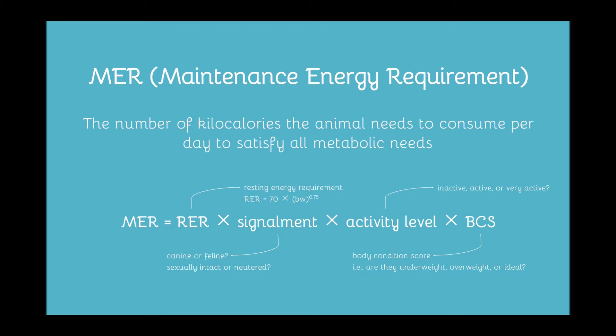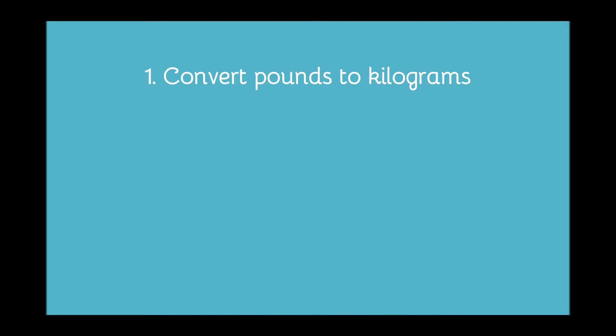Signalment is going to be if the pet is a dog or a cat, or if they are intact or if they've been spayed or neutered. Activity level refers to if the pet is inactive, active, or very active. And body condition score is going to be if they are underweight, overweight, or ideal body condition. We're going to go through each of these factors step by step. I would suggest you write down each of these factors as we go through and keep track of what your pet's numeric value is for each factor so at the end we can bring it all together.